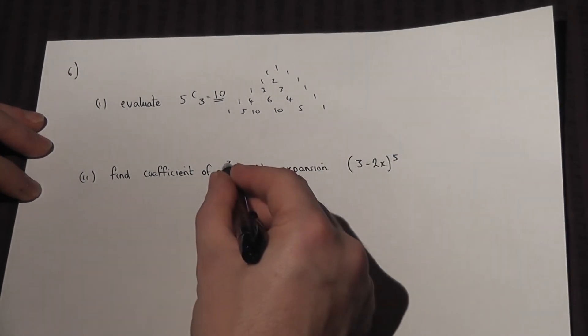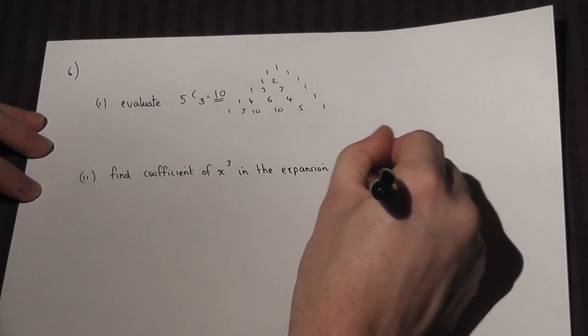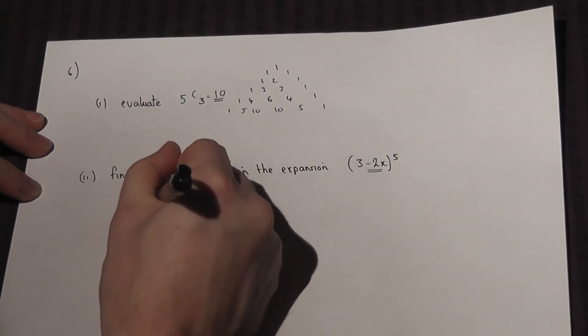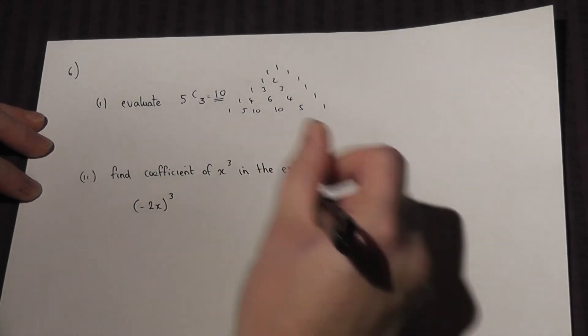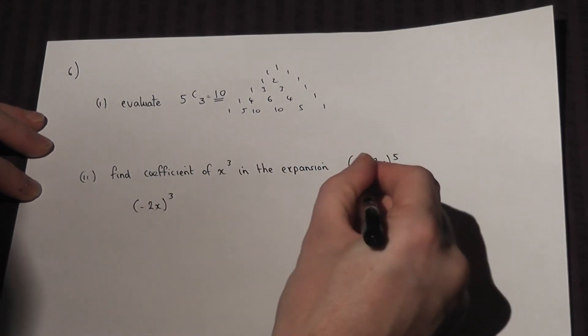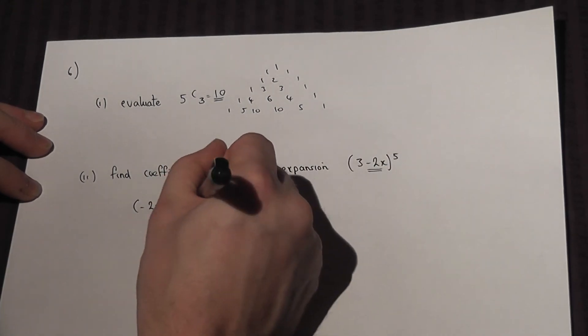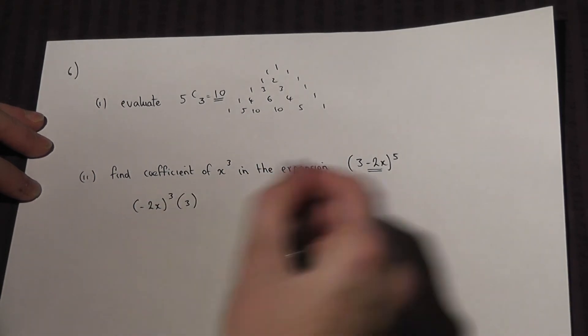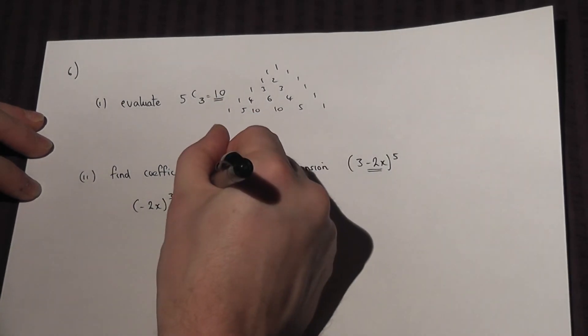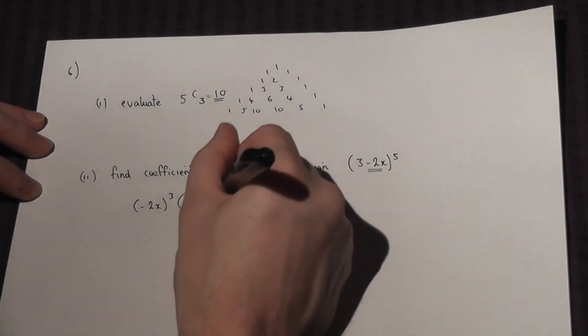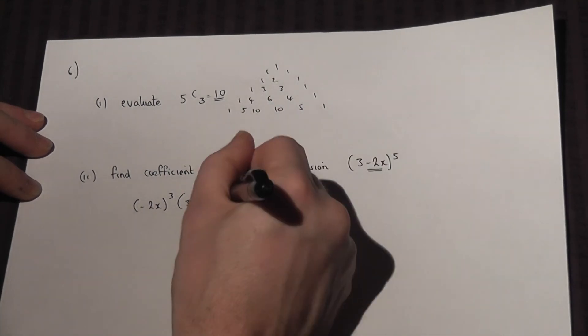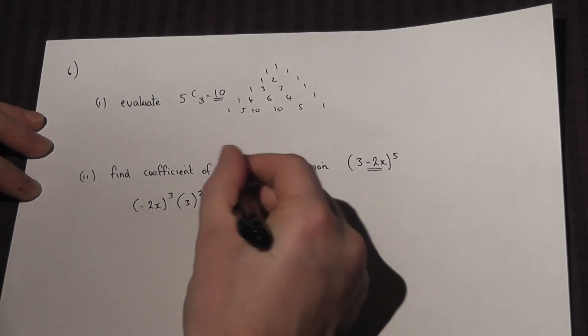We need x cubed, so therefore this part here must be raised to the power of 3 to get the x³. This part, then, is the power which adds to make 5, in this case a 2, and this then times by 5C3.